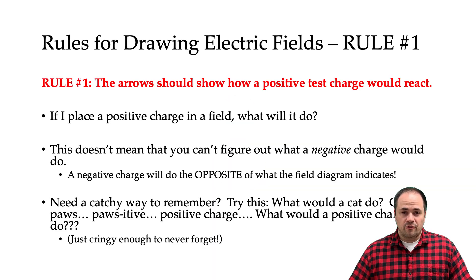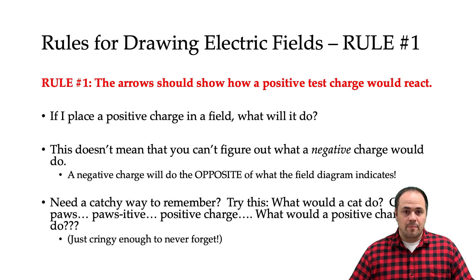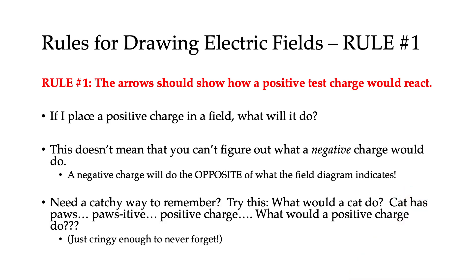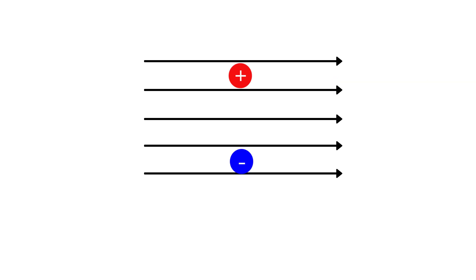This brings us to rule number one of drawing electric field diagrams: the diagrams are drawn based on what a positive test charge does in the field. In other words, if I place a positive charge in a field, what's it going to do? This is what the arrow should indicate. This doesn't mean that you can't figure out what a negative charge would do in the field based on the diagram — a negative charge would simply do the opposite of what the diagram indicates.